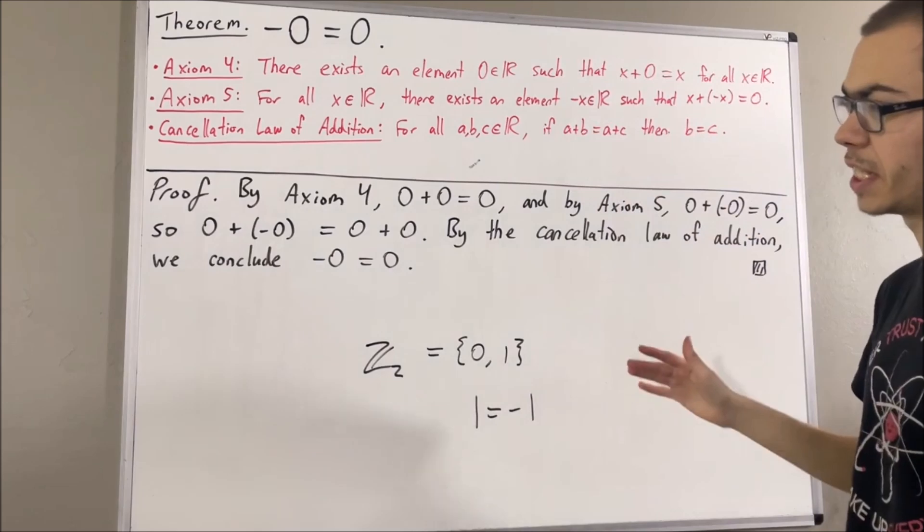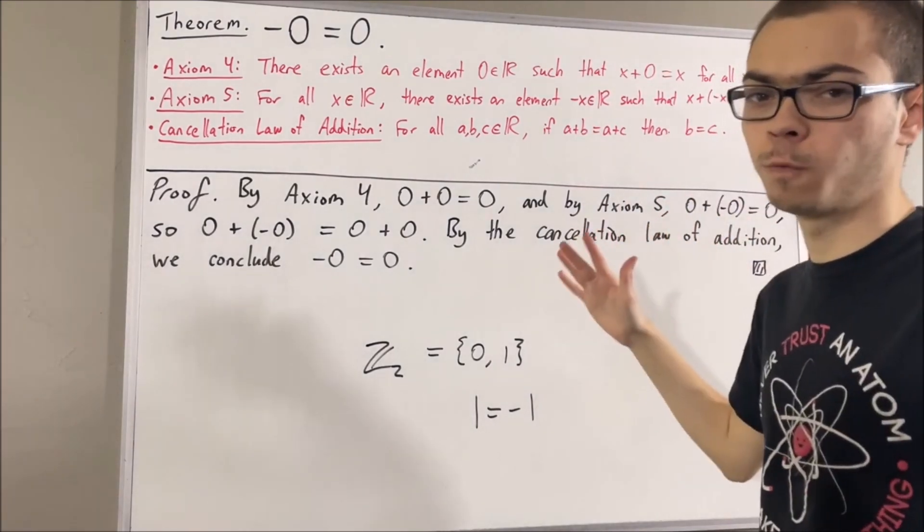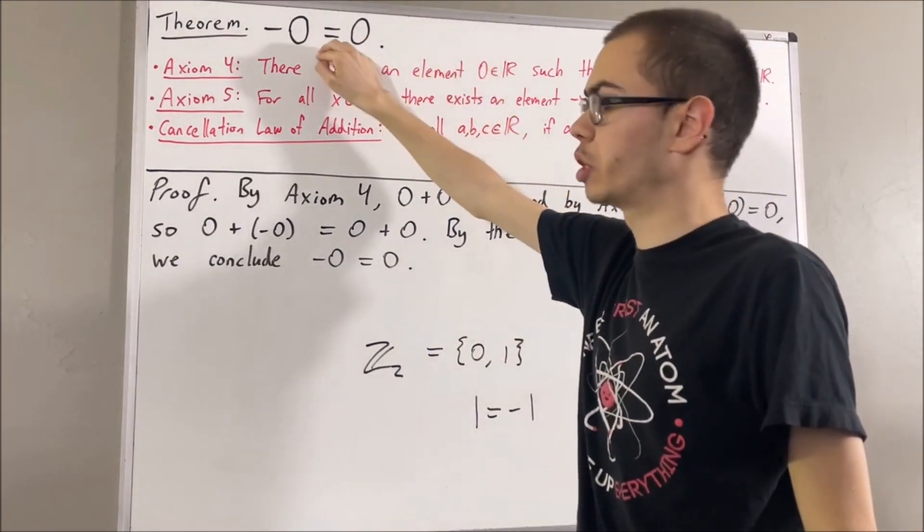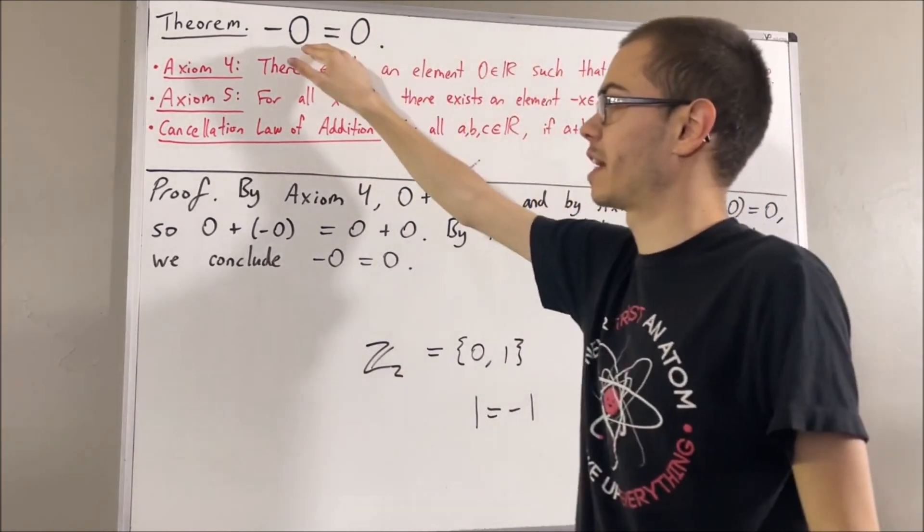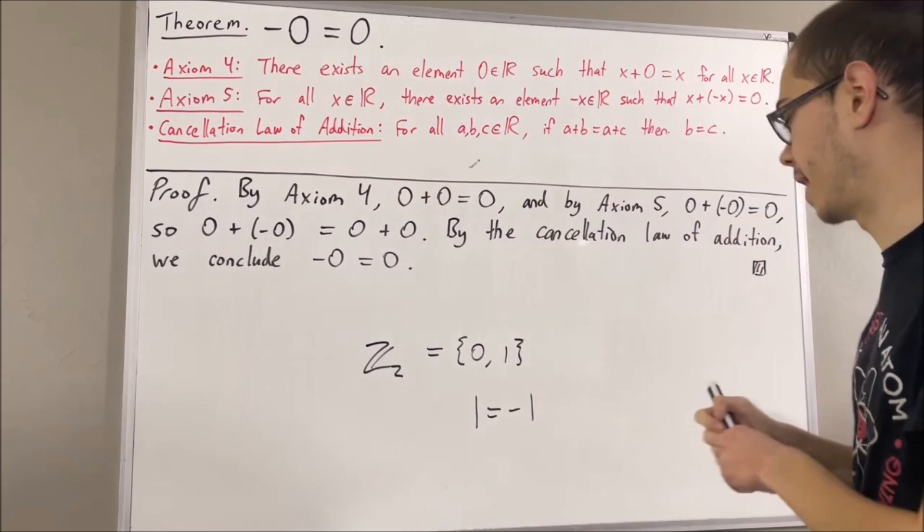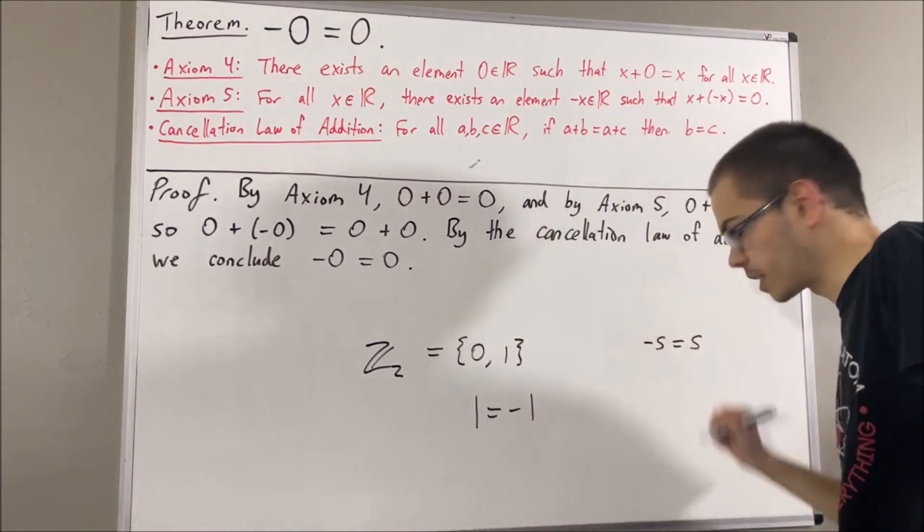And let's actually see how a sketch of a proof would go that zero is the only real number that satisfies this property. Well, suppose we have another real number that satisfies this property. I'll call it S. So, we have negative S equals S.